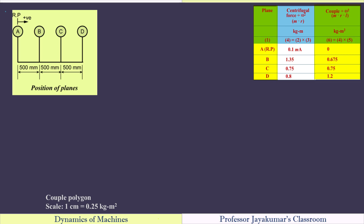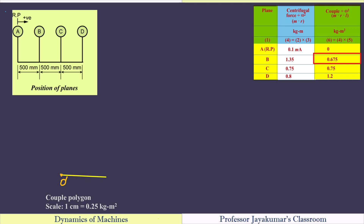Using the tabulated data, let us draw the couple polygon. We know that the couple polygon is a vector diagram requiring magnitude as well as direction. We need to take a suitable scale — I chose 1 cm equal to 0.25 kg·m². Let us start the couple diagram arbitrarily from a point O dash. Since the couple value for mass A is zero, it will lie on the same point. The couple values due to mass B, C and D are known in magnitude, but we do not know their directions. We can assume any one of the three masses B, C or D as horizontal. So to start with, I will assume mass B is acting horizontally, meaning theta B equals 0 degrees.